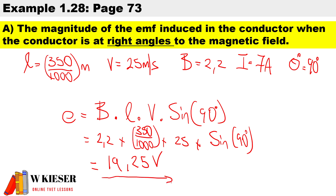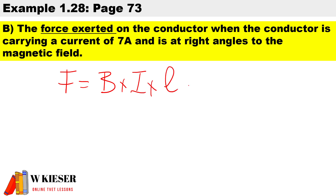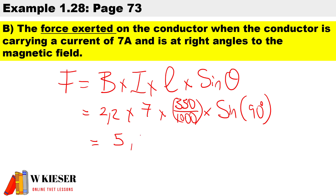In part (b), we calculate the force exerted on the conductor when it is carrying a current of 7 amps at right angles to the magnetic field. Because we are cutting at right angles, the angle is 90 degrees. The formula is F = B × I × L × sinθ. Substituting: 2.2 × 7 × (350/1000) × sin90°. The force measured in newtons is 5.39 newtons.